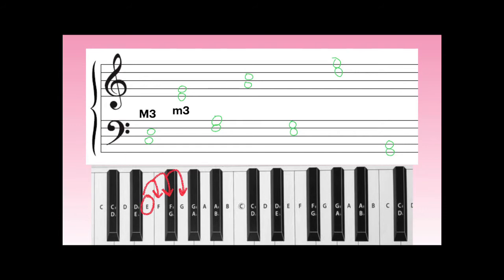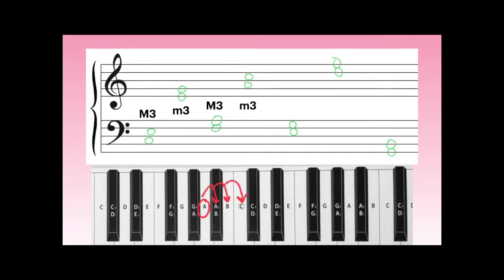Next in the bass clef, we start on an F and go up one, two, three, four half-steps for a major third. The next interval starts on A and goes one, two, three half-steps up to a C — that's a minor third.